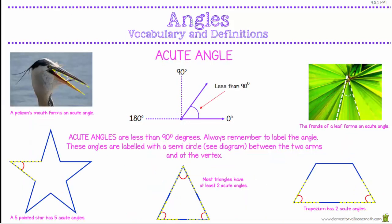The next angle is the acute angle. An acute angle is when the arms or sides make an angle that is less than 90 degrees. Acute angles are labelled with a semicircle between the two arms and the vertex. A 5-pointed star has 5 acute angles. Most triangles also have at least 2 acute angles — this particular one has 3. A trapezium has 2 acute angles as well. We can also find acute angles in nature: the leaves on a plant grew at an acute angle, and a pelican's mouth in this photo shows an acute angle.